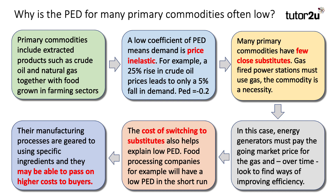Another factor making elasticity low is if the food manufacturers think they can pass on higher costs and higher prices to consumers. So, typically, primary commodities have a low price elasticity of demand because: first, they're necessities; secondly, they often have few close substitutes; thirdly, the cost of switching is often quite high; and the users of these commodities might feel able to pass on the burden of higher costs to their consumers.